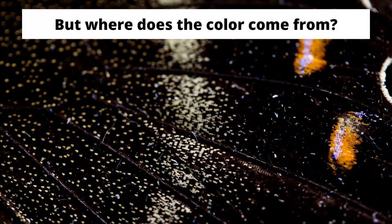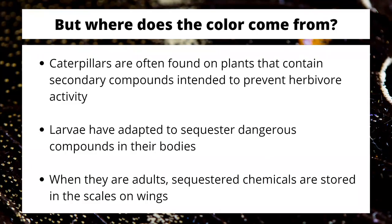Now the big question when it comes to scales is: where does that color come from? The color arises from the way the insect handles some of the more toxic materials it's forced to consume. Caterpillars, since they're primarily herbivores, are on plants that have developed what we refer to as a secondary compound or toxin intended to make herbivores not consume that plant. Larvae adapted a defense — they consume the plant and sequester any toxic materials in their bodies, where it won't get digested. Then when they become adults, those sequestered chemicals become stored in the scales on the wings.